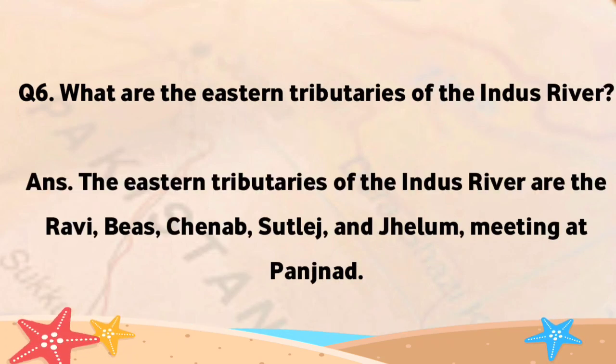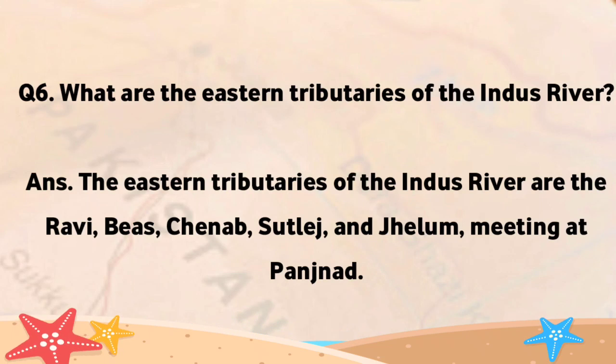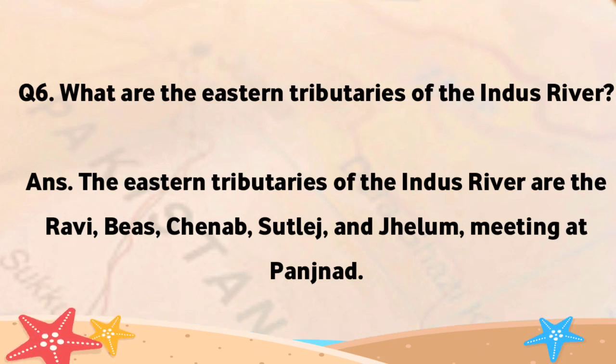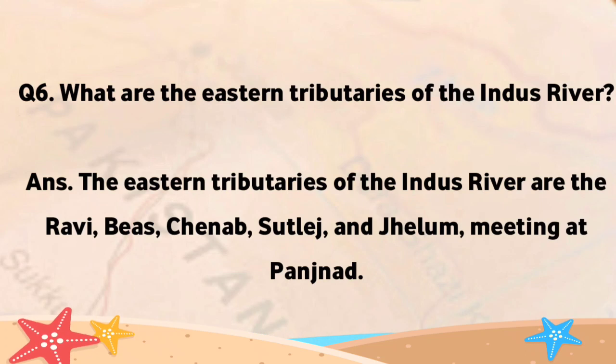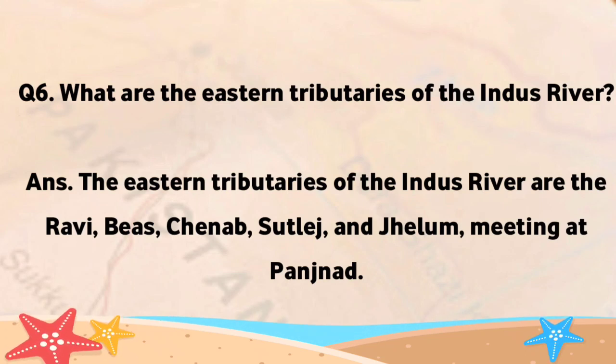What are the eastern tributaries of the Indus River? The eastern tributaries of the Indus River are the Ravi, Bees, Chenab, Sutlij, and Jalem, meeting at Panjnad.